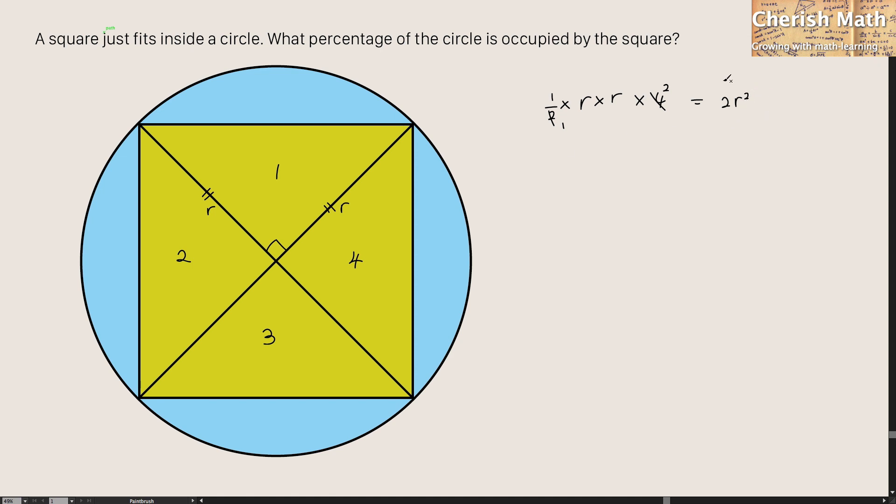I'm going to use the area of this square 2R square divided by the area of the circle which is pi R square multiplied by 100%. That's going to be our answer.